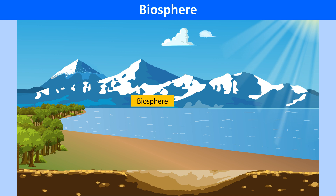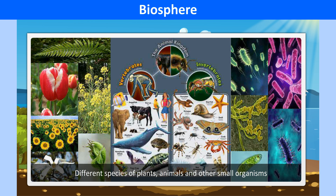The biosphere realm includes all forms of life on Earth. The biosphere is the zone where all the other three spheres — land, water and air — meet. We find life forms on the surface of the Earth's crust, within a few kilometers of the lower atmosphere, and even deep in the oceans. It supports between 5 to 30 million species of plants, animals and other small organisms.